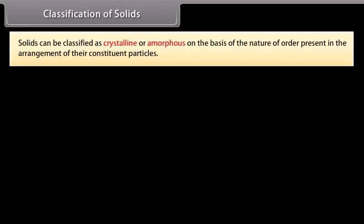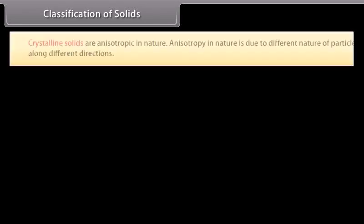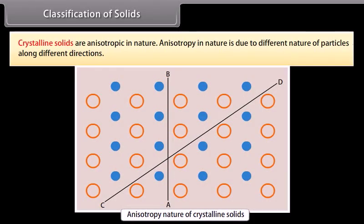Solids can be classified as crystalline or amorphous on the basis of the nature of order present in the arrangement of their constituent particles. Crystalline solids are anisotropic in nature due to different nature of particles along different directions.